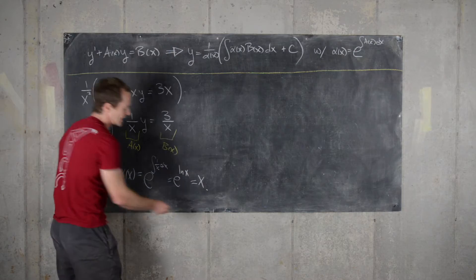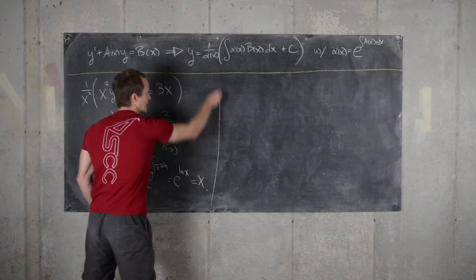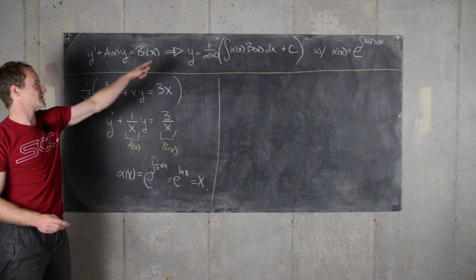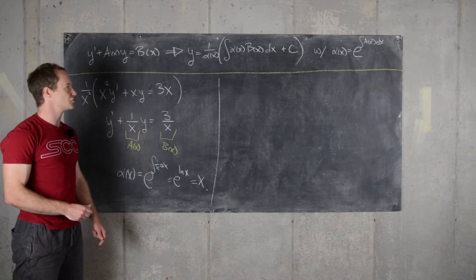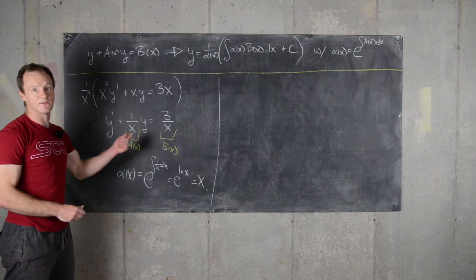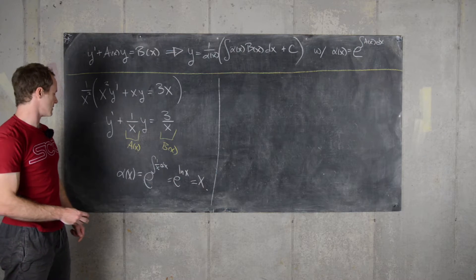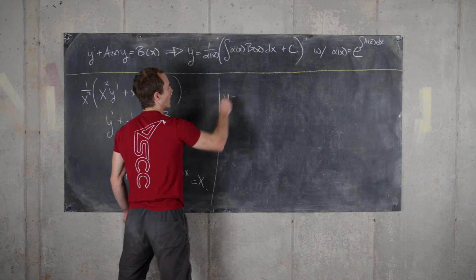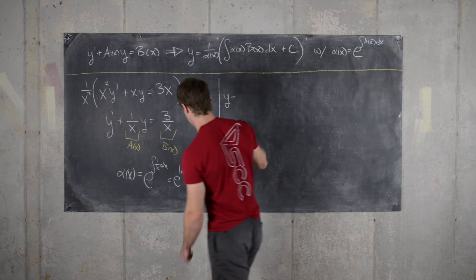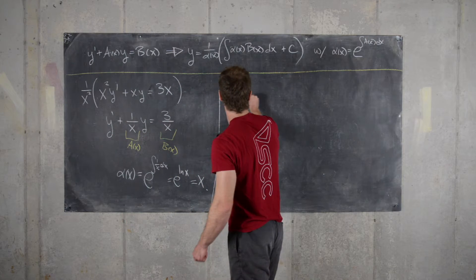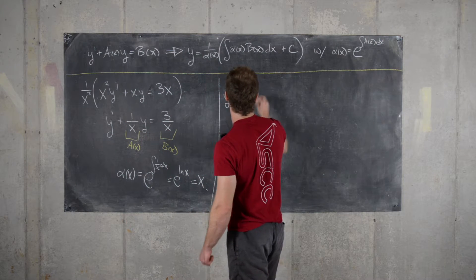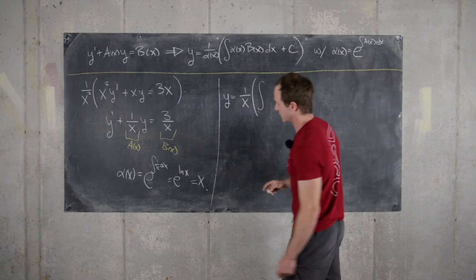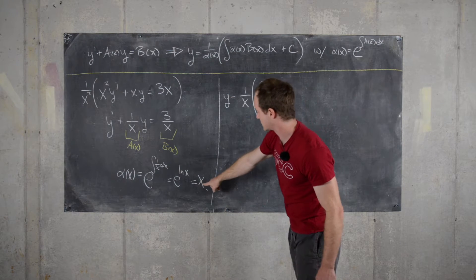Now that we have alpha of x, we can plug it into our solution, which we derived in the previous video. Our solution is y equals 1 over x times the quantity, the antiderivative of: